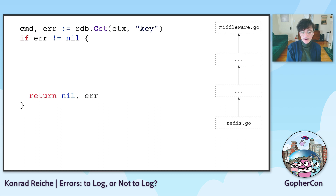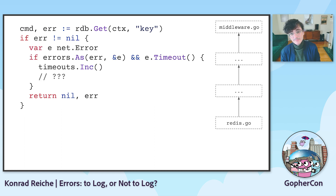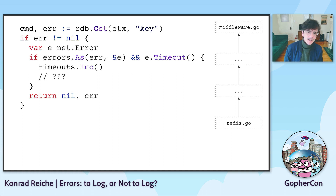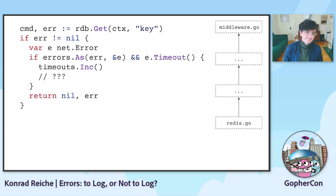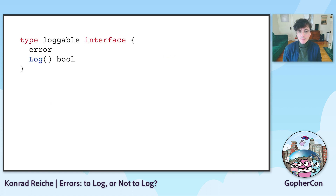We move the network error assertion to our Redis client and location here. But what do we do after the assertion? Should we log it? We still need to return it here because we don't want to log and return the error. From Dave Chaney, I learned to assert errors for behavior — and so this is what I came up with.